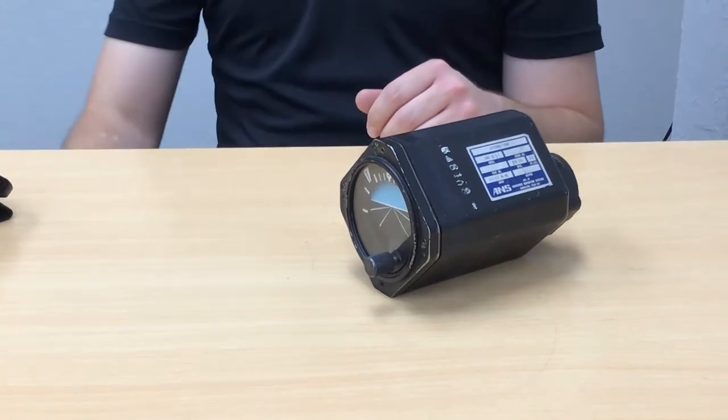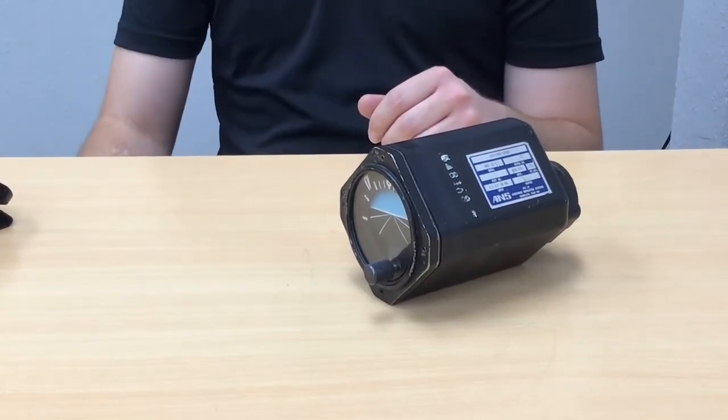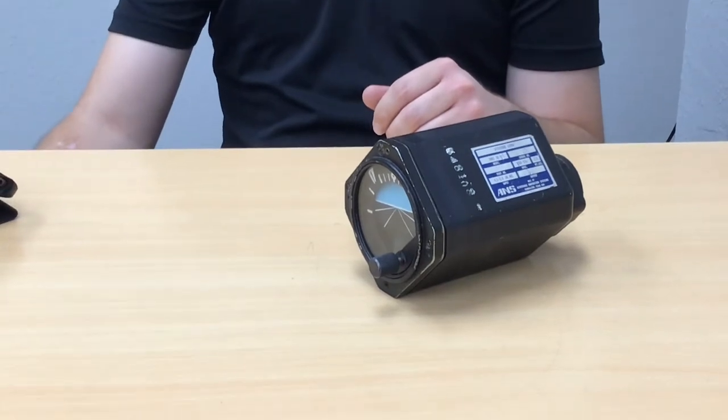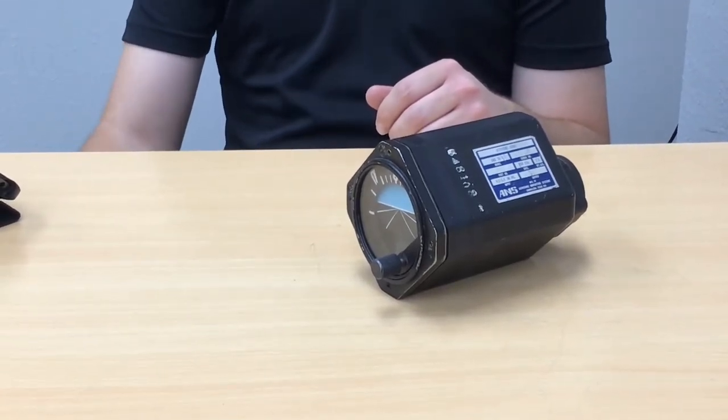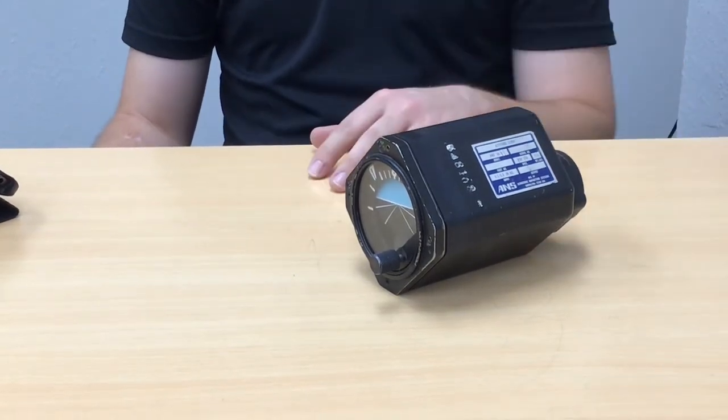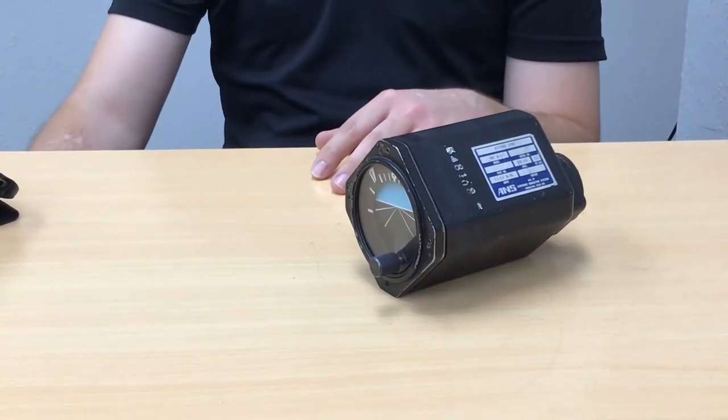So if you take a look inside the 172 POH we have here, it's a very simple vacuum system really. Power is supplied by our engine driven vacuum pump, we have a regulator controlling suction, got the attitude indicator itself, transducer for the engine indicating system, and an air filter.